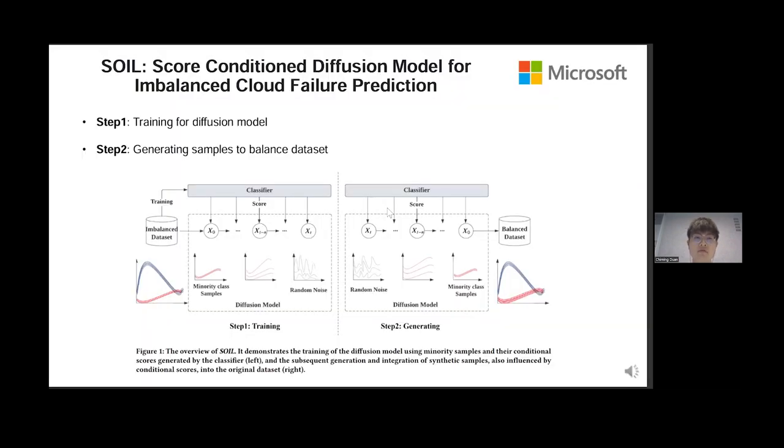In our view, the high-quality samples used to balance the dataset should be located near the decision boundary of the classification task. These samples, being informative and posing a significant classification challenge, offer valuable learning opportunities for the model, as shown in the figure.